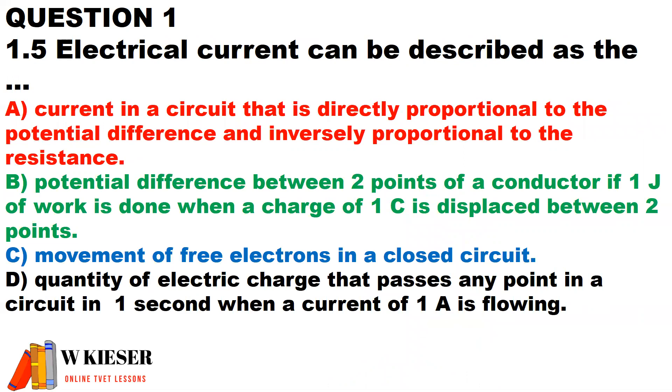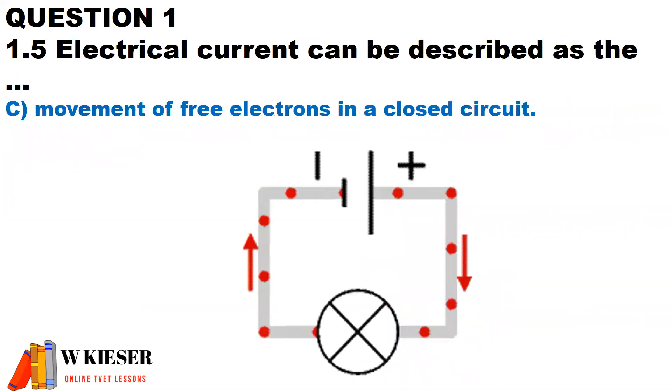Electrical currents can be described as the movement of free electrons in a closed circuit. In this illustration, we have electron flow from the negative terminal through to the positive terminal.